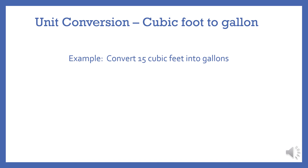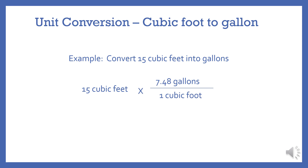Now let's do a quick conversion to wrap up. As an example, let's say you have 15 cubic feet and you want to convert it to gallons. You take the 15 cubic feet and multiply it by 7.48 gallons per cubic foot. The units of cubic feet and cubic foot cancel out. The result is 112.2 gallons.